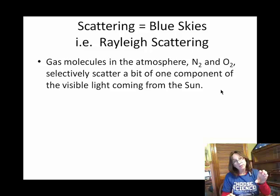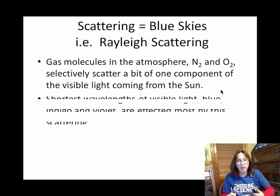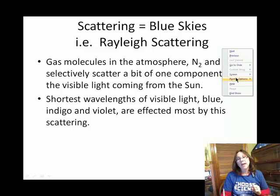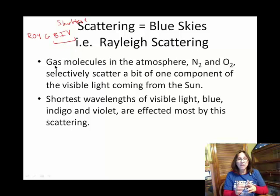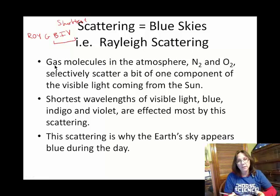The Earth's atmosphere is mostly nitrogen followed by oxygen — permanent gases at about an 80-20 ratio, always in about the same composition. They are very selective for a particular wavelength of light. Specifically, of the visible light coming from the sun, it's the shorter wavelengths that are scattered by the presence of those gases. So if we write red, orange, yellow, green, blue, indigo, and violet, the shortest wavelengths are the blue, indigo, and violet. Those particular wavelengths, as they hit oxygen and nitrogen, are preferentially scattered.